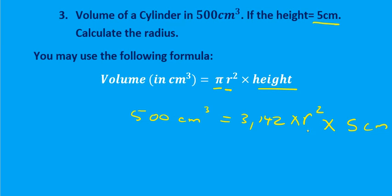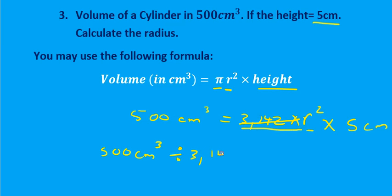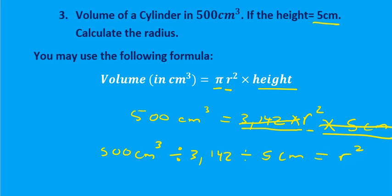We need to apply the inverse to get to our radius. We have 500, and pi is multiplied, so the inverse of multiplication is division — we divide by pi on the other side. The 5 is also multiplied, so we cancel it out by dividing by 5 on the other side. We are then left only with the radius squared.